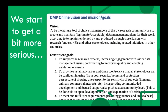This is another document I found when looking through my files: the first DMP Online vision and mission. As Kevin mentioned, our initial audience was the UK research community. The first vision was to be the natural tool of choice that members of the UK research community use to create and maintain legitimate or acceptable data management plans, according to templates endorsed by and produced through close liaison with research funders, HEIs, and other stakeholders. The endorsement of funders was quite important to us. We thought attracting their attention and approval would be relatively straightforward, but we did end up getting approval from only some of them — not all. That was a lesson learned.